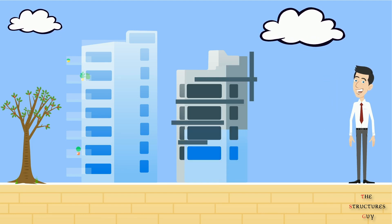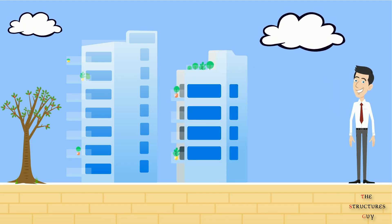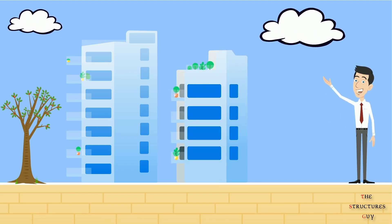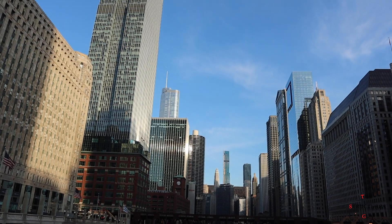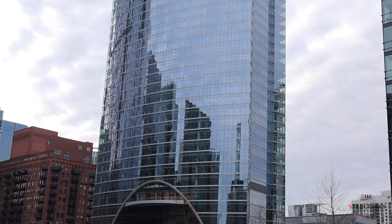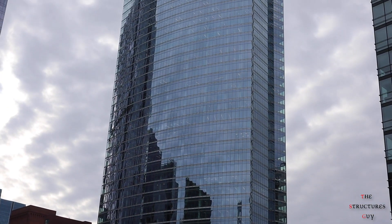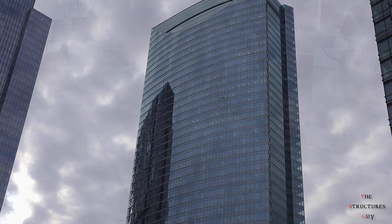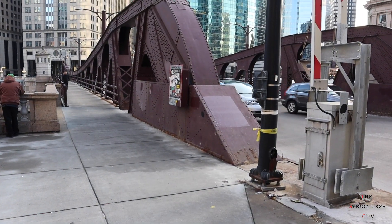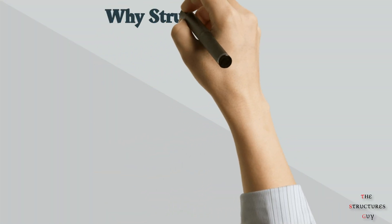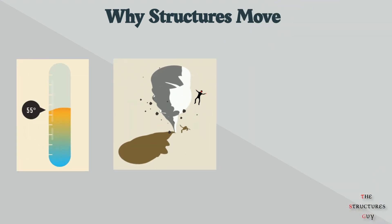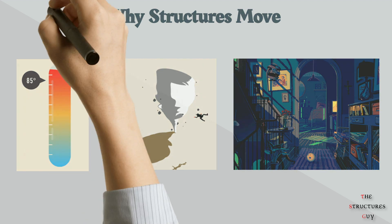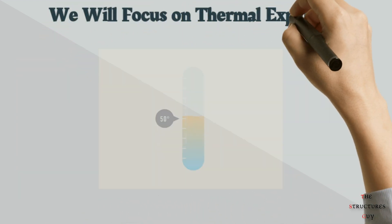Hello everybody, this is the Structural's Guy. Today we're talking about thermal expansion of civil structures. It is generally thought that civil structures like buildings and bridges are static structures — things that don't move — but that cannot be further from the truth. In fact, structures can move for different reasons like thermal expansion, wind pressure, or even earthquake. Today, we'll focus on thermal expansion or movement.